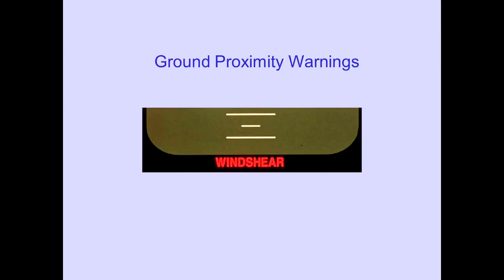The ground proximity warnings are enunciated below the attitude indication. This will be discussed in the ground proximity module.